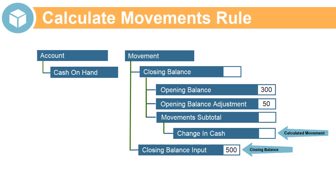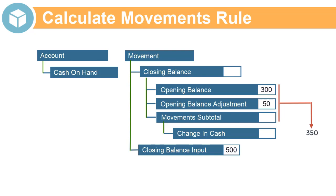The Calculate Movements rule runs during the consolidation process. It sums opening balance, opening balance adjustment, and movement subtotal. It subtracts this from closing balance input to calculate the current period movement, and writes the result to a specified movement member.